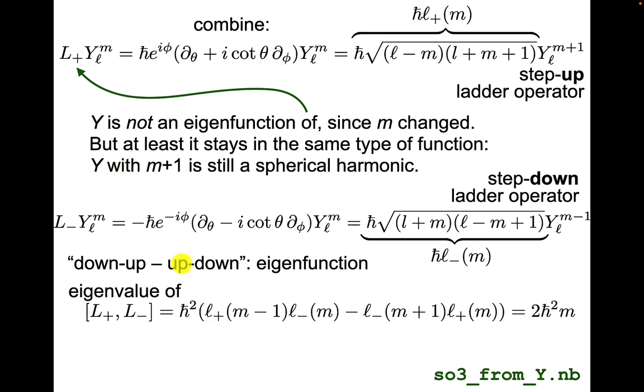Since we have a step up and a step down, we can form down-up or up-down, then Y is going to be an eigenfunction of L_+ L_- or L_- L_+. And if we subtract them, we can hope to get something interesting. So if you just algebraically compute this combination from these two, I claim you get 2ℏ² m, which is very nice and simple. Since ℏm was the eigenvalue under L_z, we can write this non-trivial result like this.